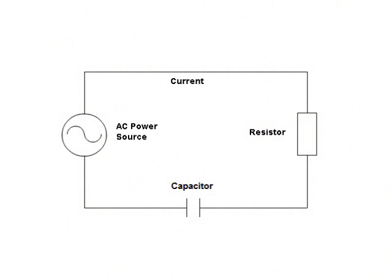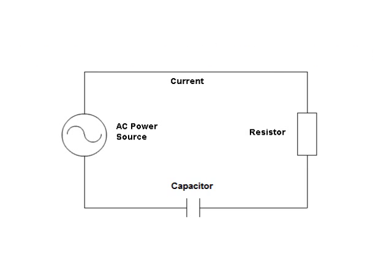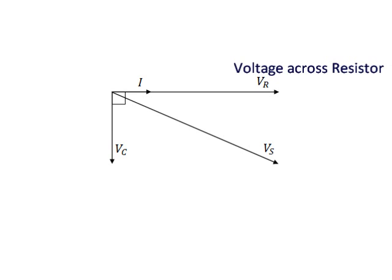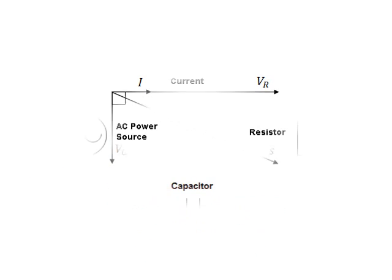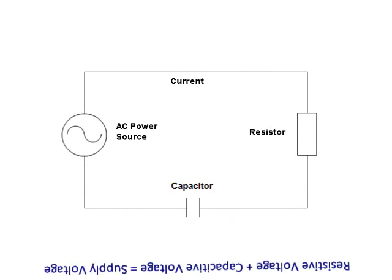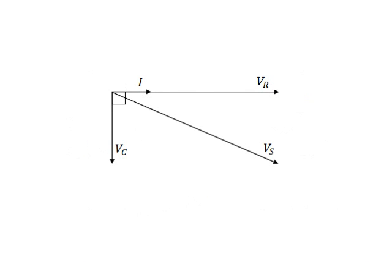Let us now combine two components together in series, starting with the capacitor and resistor. The current through both components will be the same, as is the rule for components connected in series. For this reason, the current may be considered as the reference phasor. The resistor voltage VR will be in phase with the current, while the capacitor voltage VC will be lagging the current by 90 degrees. By Kirchhoff's voltage law, the voltage appearing across the two components must add up to the value of the supply voltage. The component voltages are shifted by 90 degrees with each other; hence their addition has to be done vectorially.